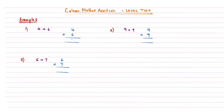The thing that is different about Column Method Addition Level 2 is that we're going to see what happens when the result of the addition of one column makes a number that is 10 or above. The problem is that numbers 10 or above have two or more digits, and that poses a problem when we only have room underneath a column for one digit.